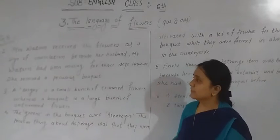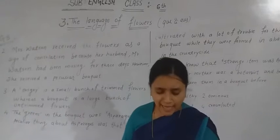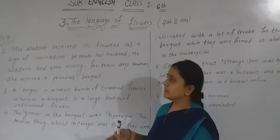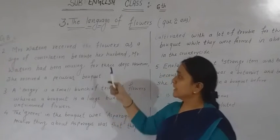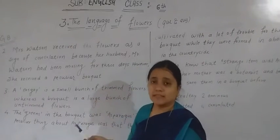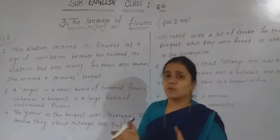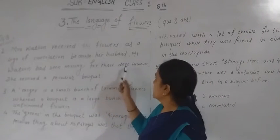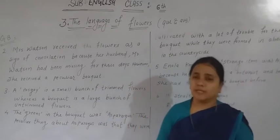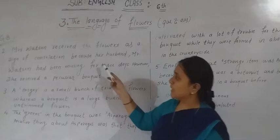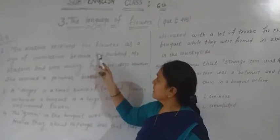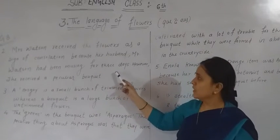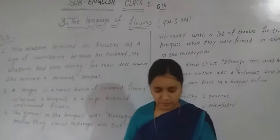Question number two: why did Mrs. Watson receive the flowers? Mrs. Watson received the flowers as a sign of consolation, because her husband Mr. Watson had been missing for three days. However, she received a peculiar bouquet. So note down this answer: Mrs. Watson received the flowers as a sign of consolation because her husband Mr. Watson had been missing for three days; however, she received a peculiar bouquet.